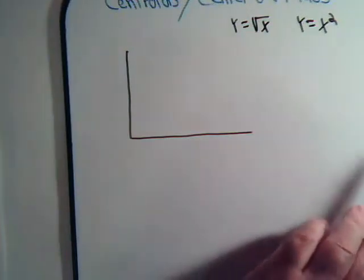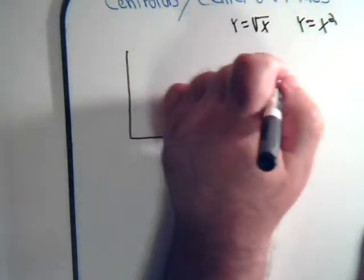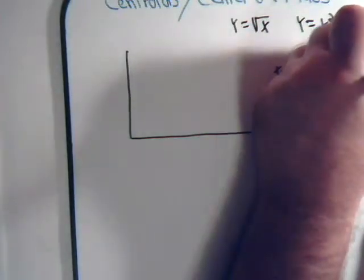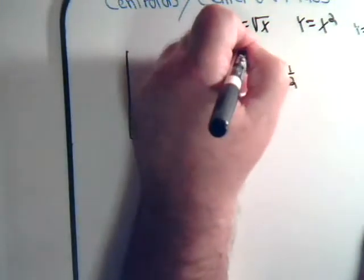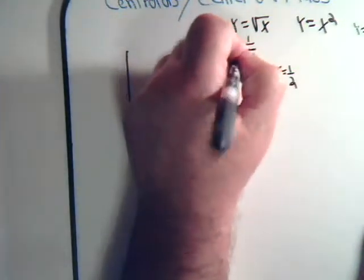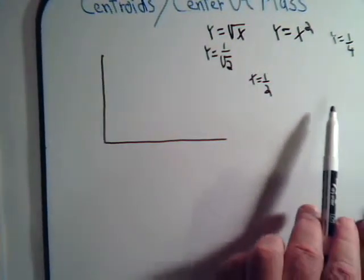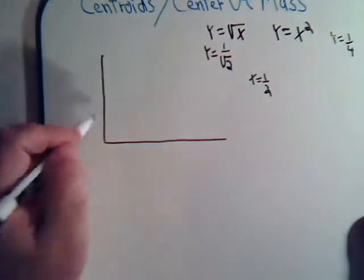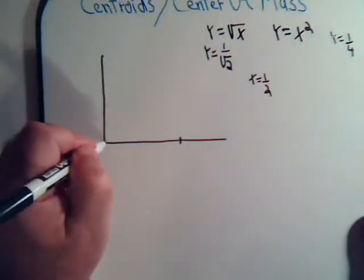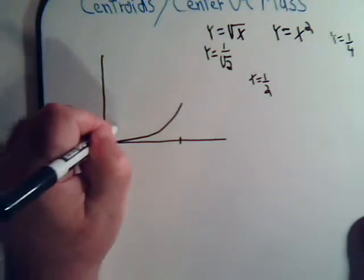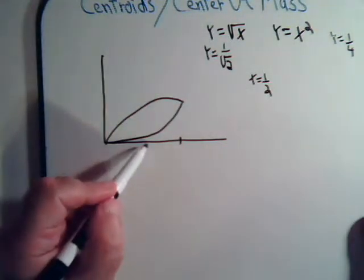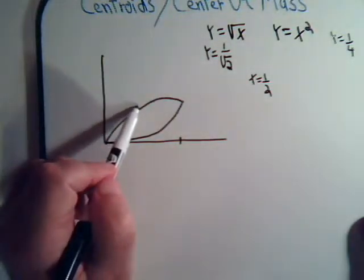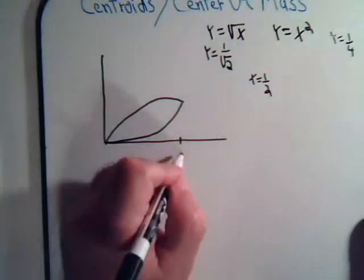What would the curves look like? Taking a point in between, say x equals one-half: x squared gives one-fourth, and the square root of x gives one over the square root of two. Obviously one-fourth is less than one over root two. The x squared curve is a parabola and the square root curve goes above it, so the square root of x is the upper curve and y equals x squared is the lower curve. They meet at x equals one.